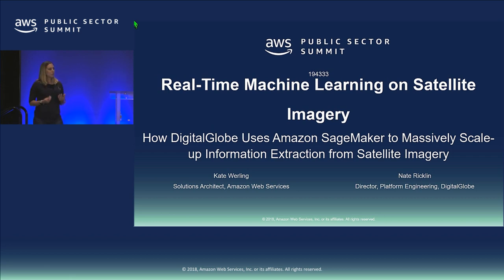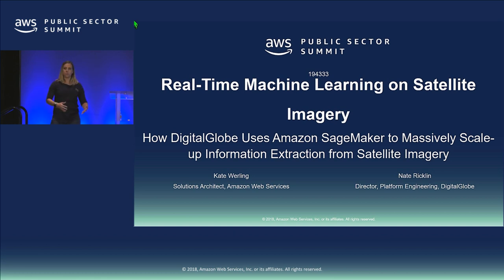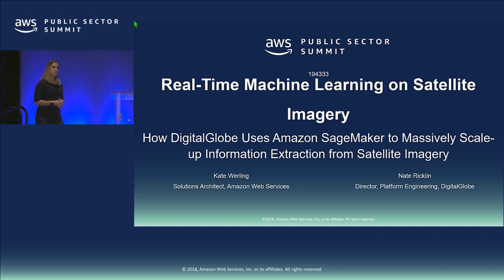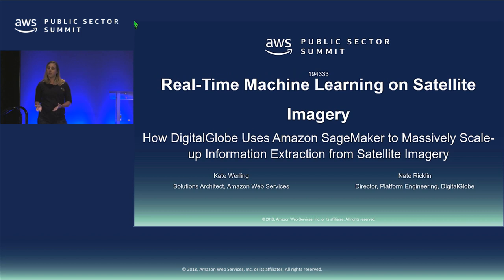Satellites are really important because they give us the ability to look at the world on a macro level. We can look at large swaths of the Earth and do more advanced mapping. We can track things like climate change and natural disasters. It's really cool with the work that Digital Globe has been doing using Amazon SageMaker to bring machine learning into this problem and do much more advanced analytics on satellite imagery.